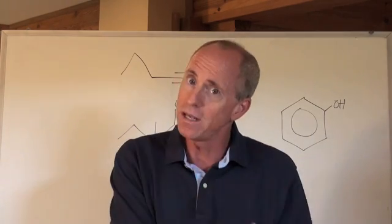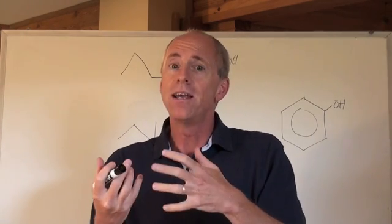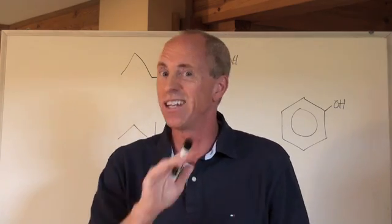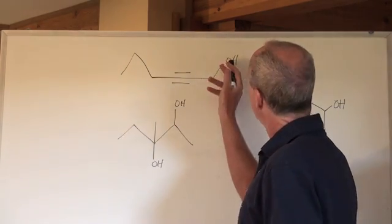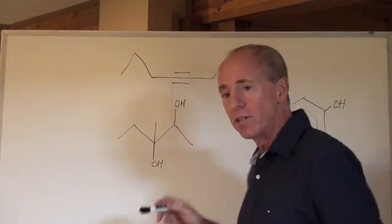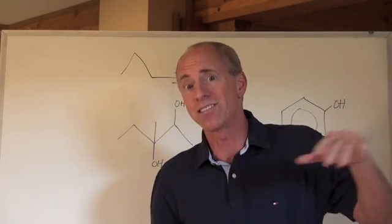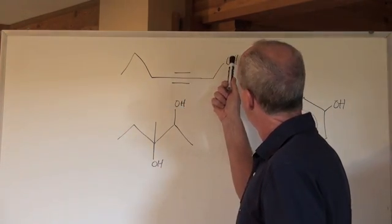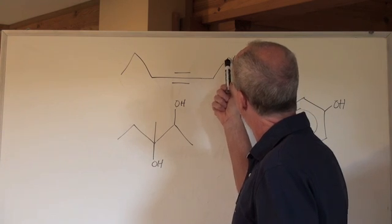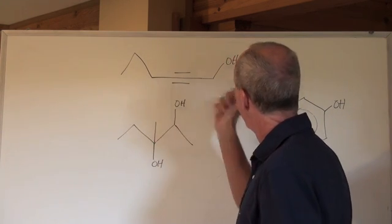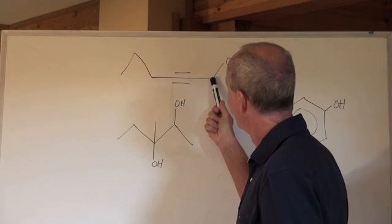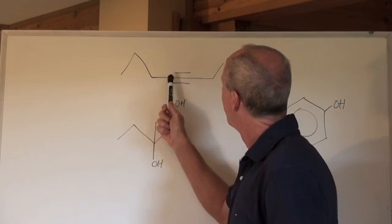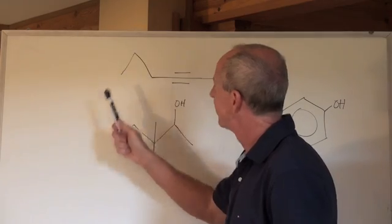So this is going to be an alcohol, but it has a yne in it, and we're going to end it with an '-ynol' kind of ending. The alcohol takes precedence, so whichever end it's closest to is where we start. It's going to be a primary alcohol, so we go in this direction: carbon number one, two, three, four, five, and six.